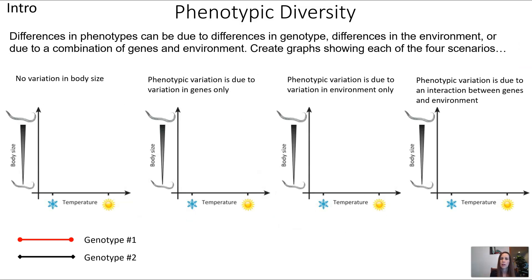Very simply, different phenotypes can differ due to differences in genotype — the genes — differences in the environment, or most commonly, a combination of both. Let's do a little graphing exercise and see if you can come up with a way of expressing a trait where the difference between individuals is due to one of four scenarios. Get out a piece of paper and see if you can draw these graphs.